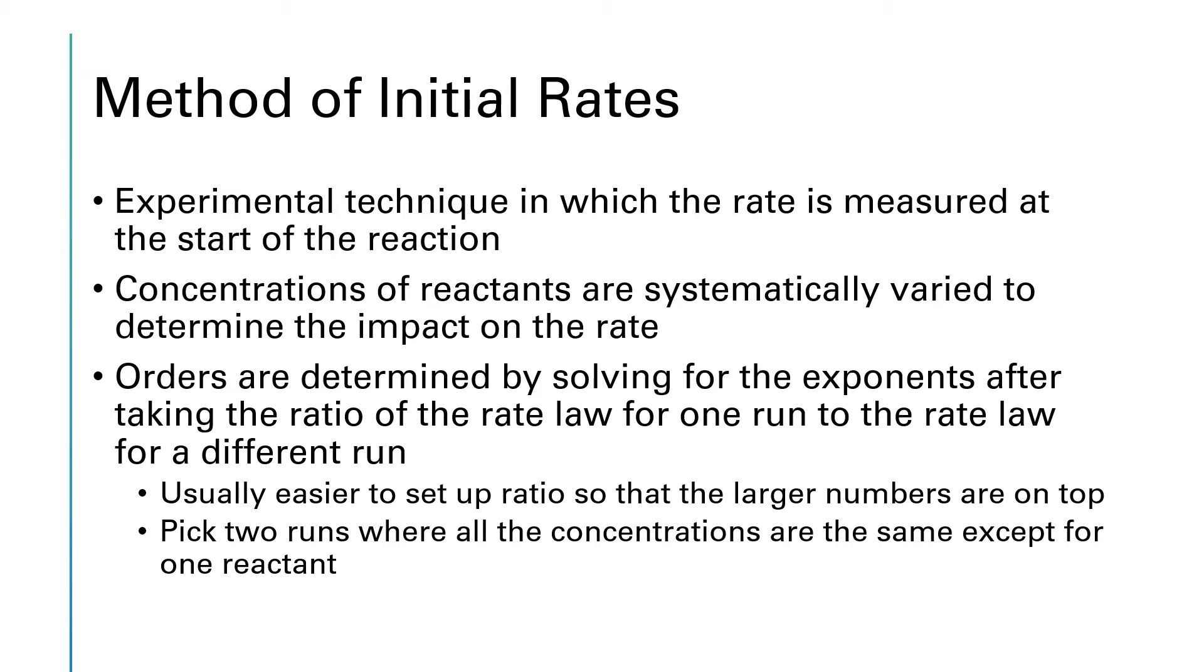And then taking the ratio of those two equations. If you do this right, you can get all kinds of things to cancel out, so you end up with a simple expression that shows the ratio of the rates is equal to the ratio of a concentration all raised to an exponent, which is the order. One of the things or two things that you can do to make this process work out more easily is to, first of all, set up your ratios so that the bigger number is on top and the smaller numbers are going to be on the bottom. And then pick two runs of the experiment where all of the concentrations are the same except for just one. And then everything else cancels out and you'll know what the exponent or the order for that one reactant is.